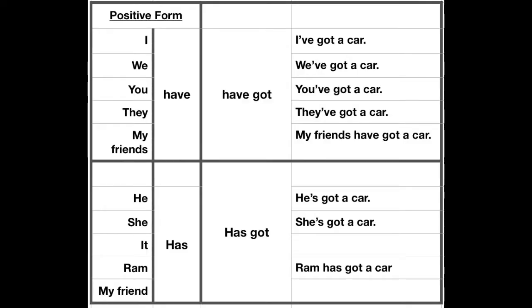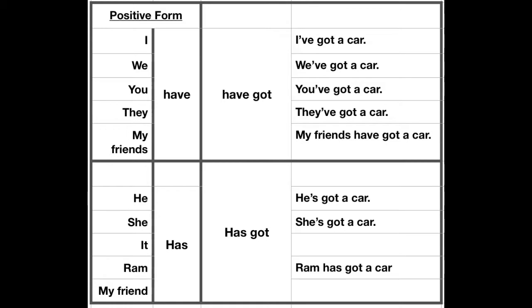For I, we, you, they, or 'my friends' — we say 'have a car', or we can say 'have got a car'. In short: I have got a car, you've got a car, you have a car — short form: you've got a car. We've got a car or we have got a car. And they or my friends have got a car or have a car.